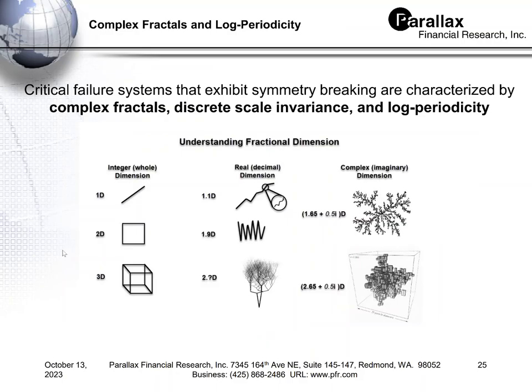So why does this happen, and how do we define this behavior? I want to back up and talk more about fractals and the Hurst exponent. The Hurst exponent is simply 2 minus the fractal dimension — a very simple modification to fractal dimension. We all know that dimensions are easily defined: one, two, three dimensions — what we call integer dimensions, whole numbers.